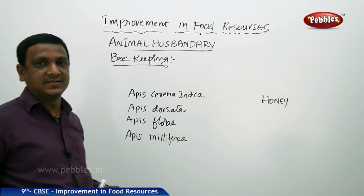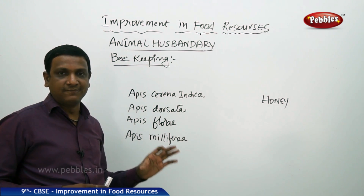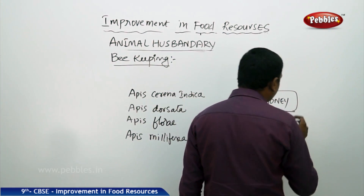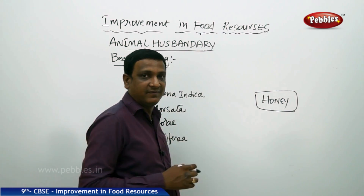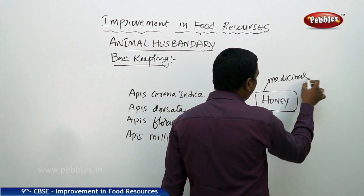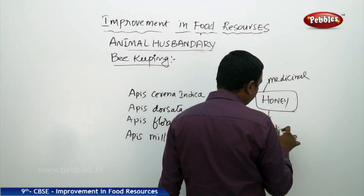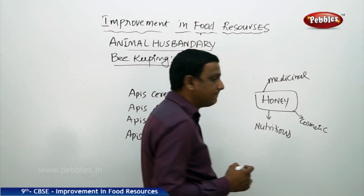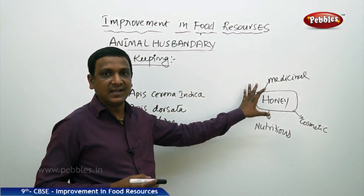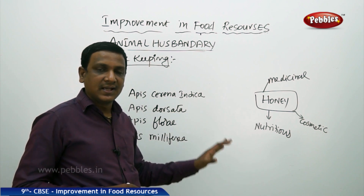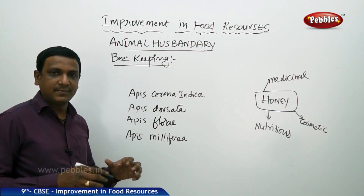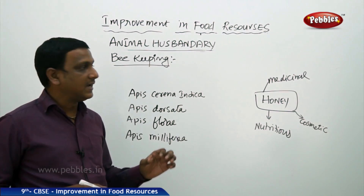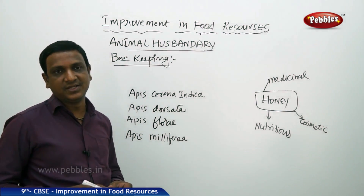Beekeeping is another enterprise under animal husbandry and another food resource. Honey is a very nutritious food with high medicinal value and very high commercial value because of its medicinal properties. It is also used in cosmetics. These properties keep the value of honey very high. Beekeeping can be set up as a side business by farmers with low investment, and both honey and wax have very good commercial value.